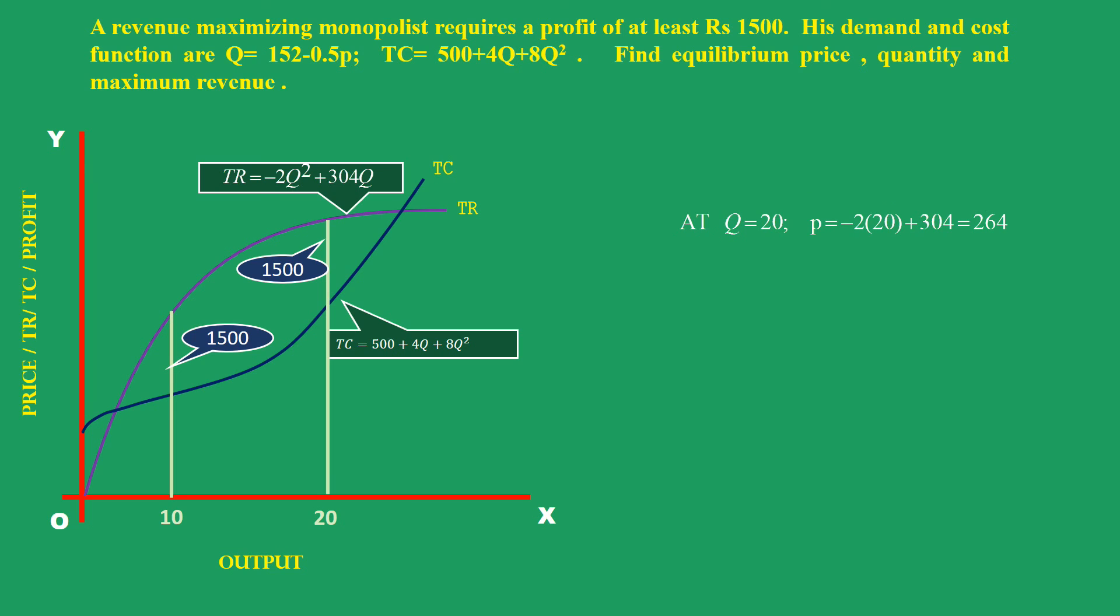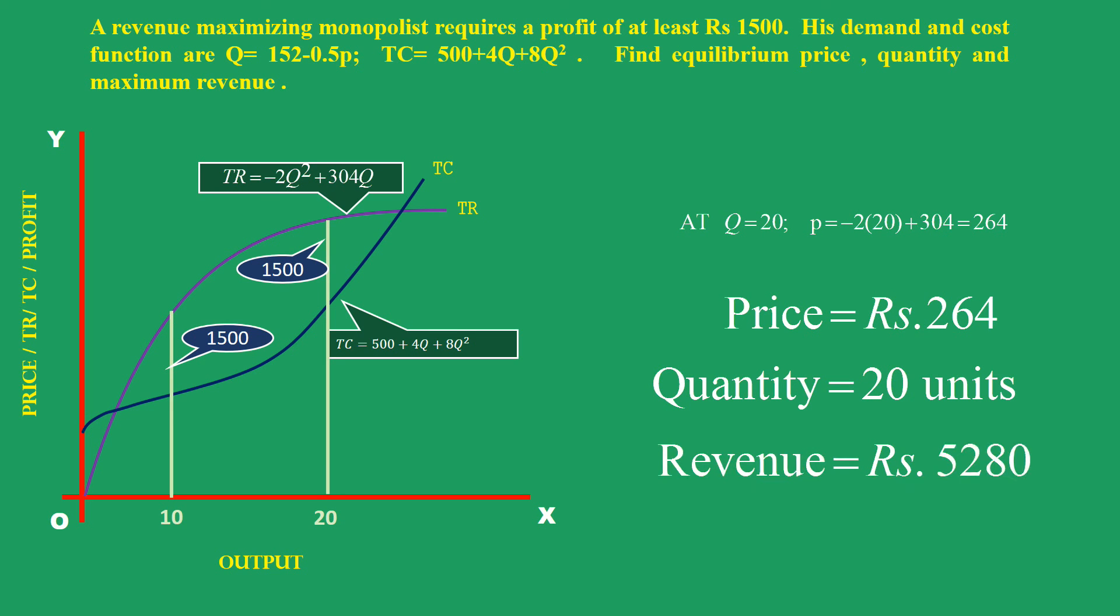To find the price, plug in Q = 20 in the demand function. The equilibrium price is Rs. 264. The equilibrium quantity is 20 units. Maximum revenue is Rs. 5,280.